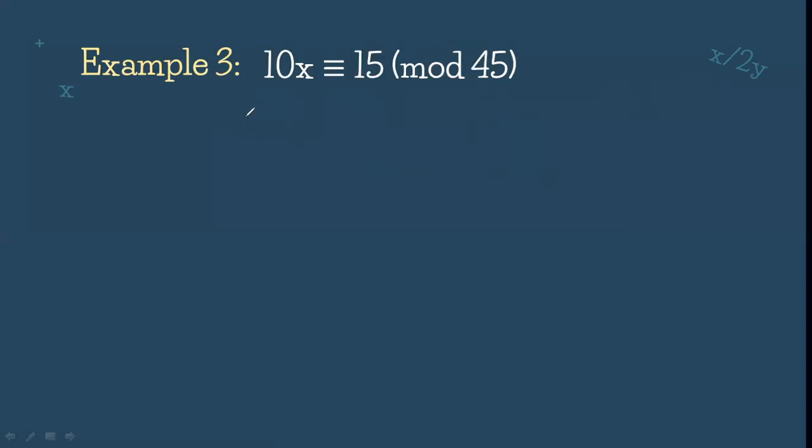For example number 3, we can see that all of the numbers are divisible by 5. So we can divide everything by 5 first. That is 2x is congruent to 3 mod 9. Now, we need to adjust 3 to be divisible by 2 to isolate x. We can use continuous addition or continuous subtraction again. In this case, I want to use continuous subtraction because it's more convenient.